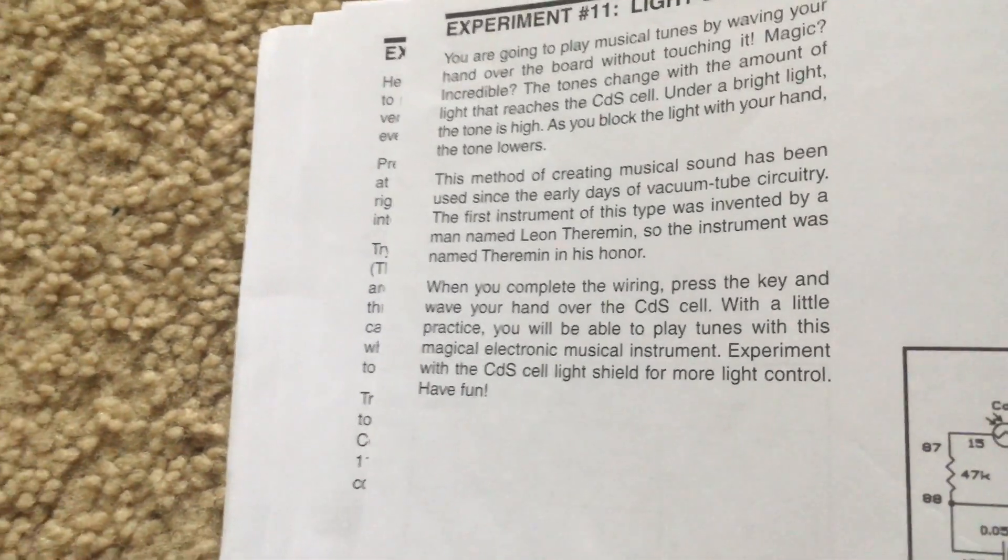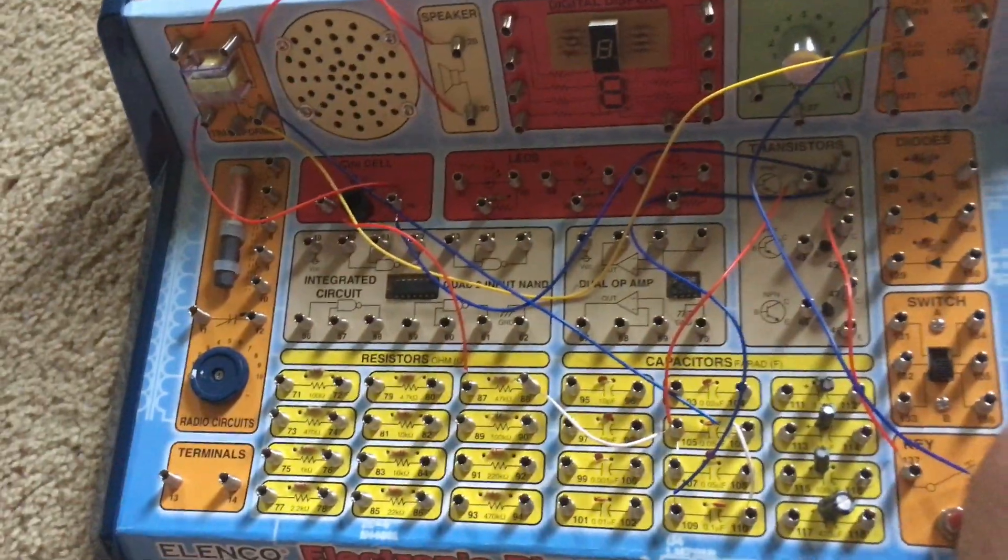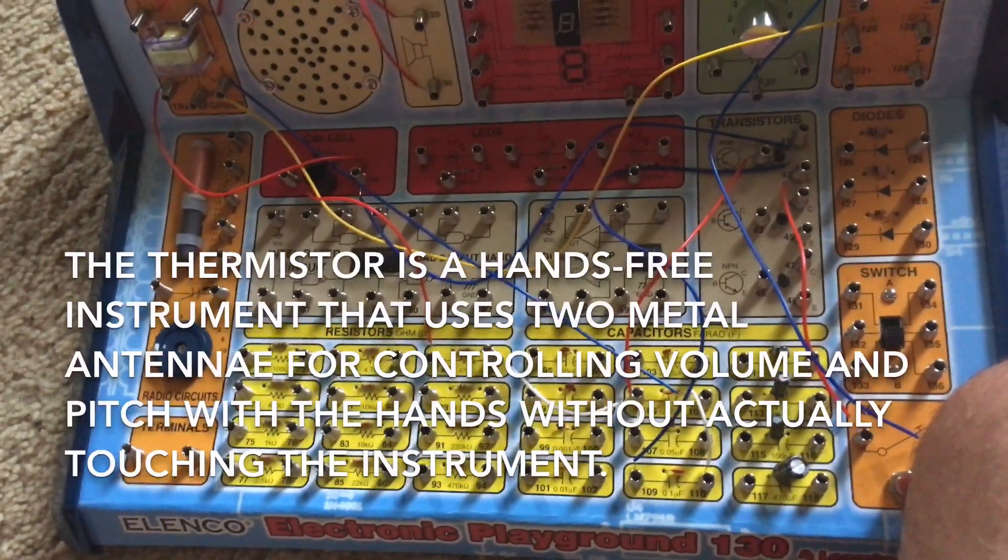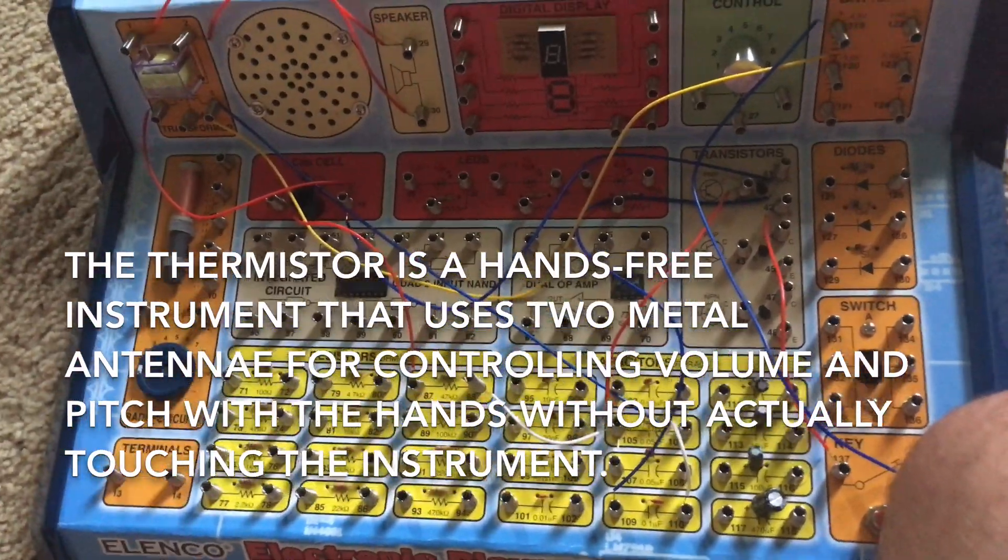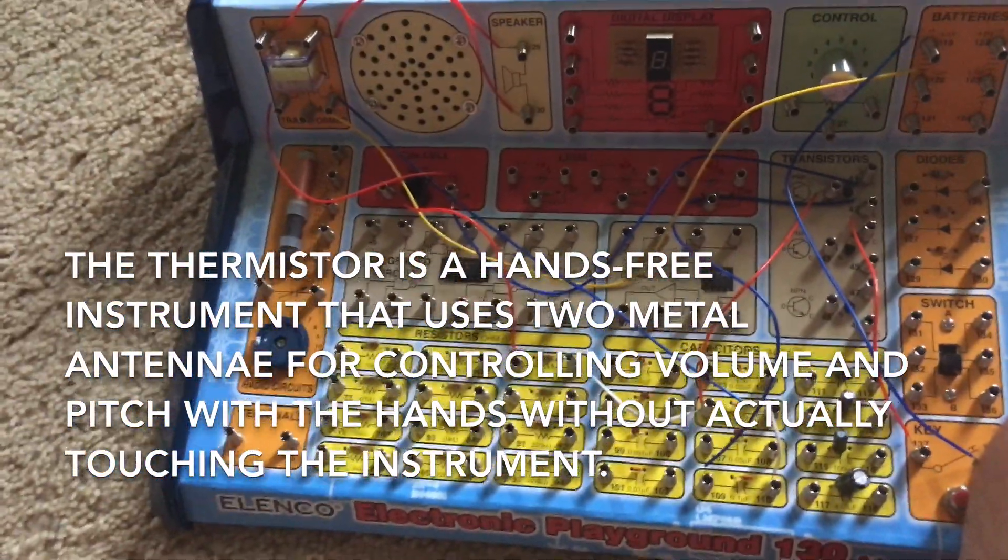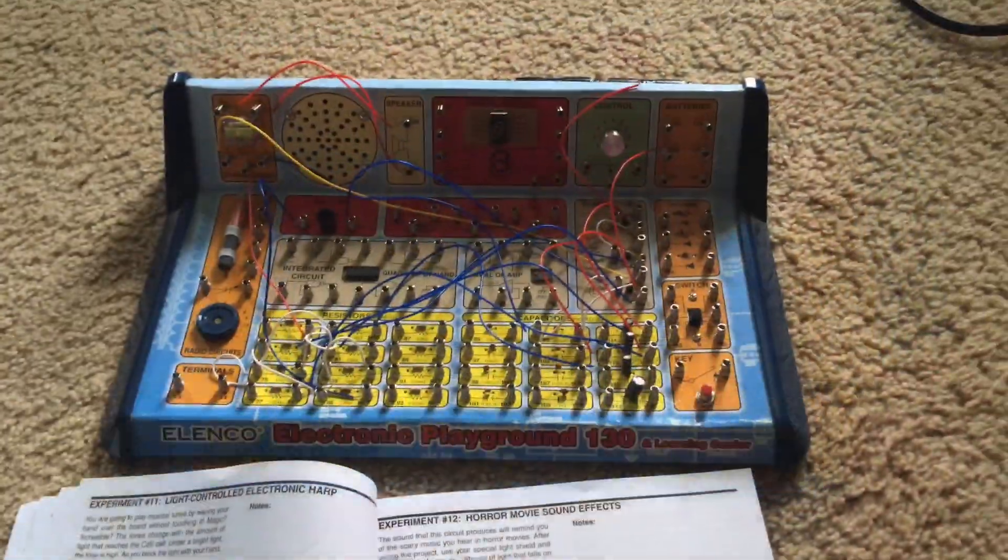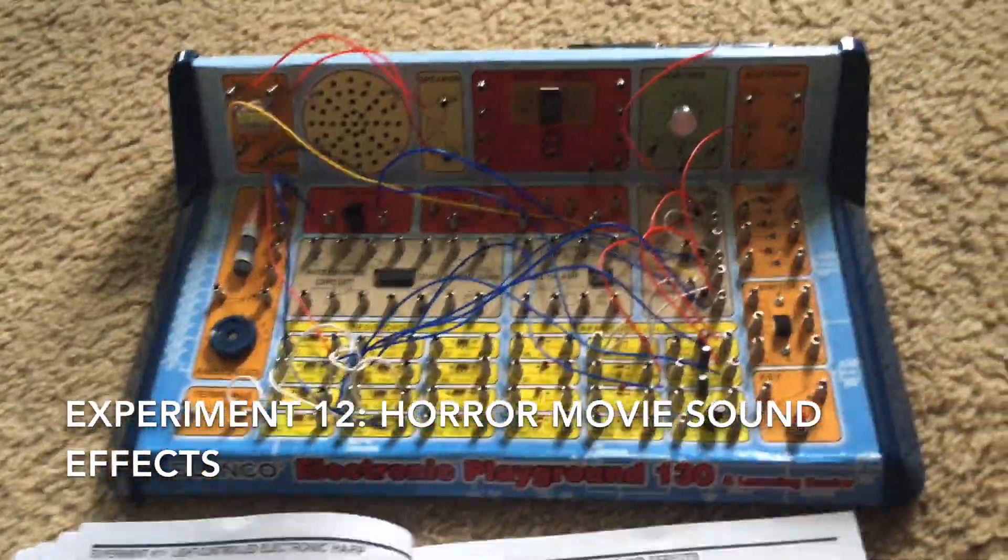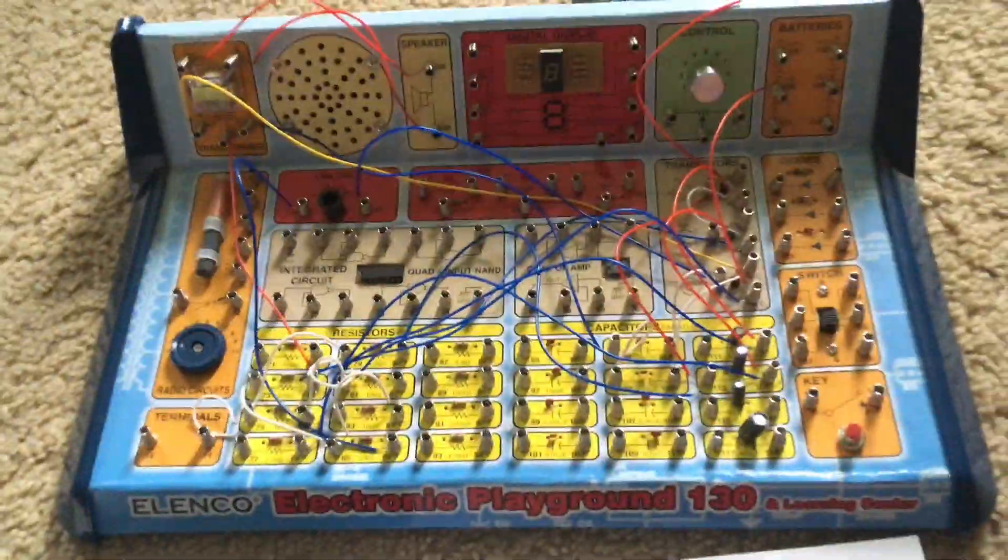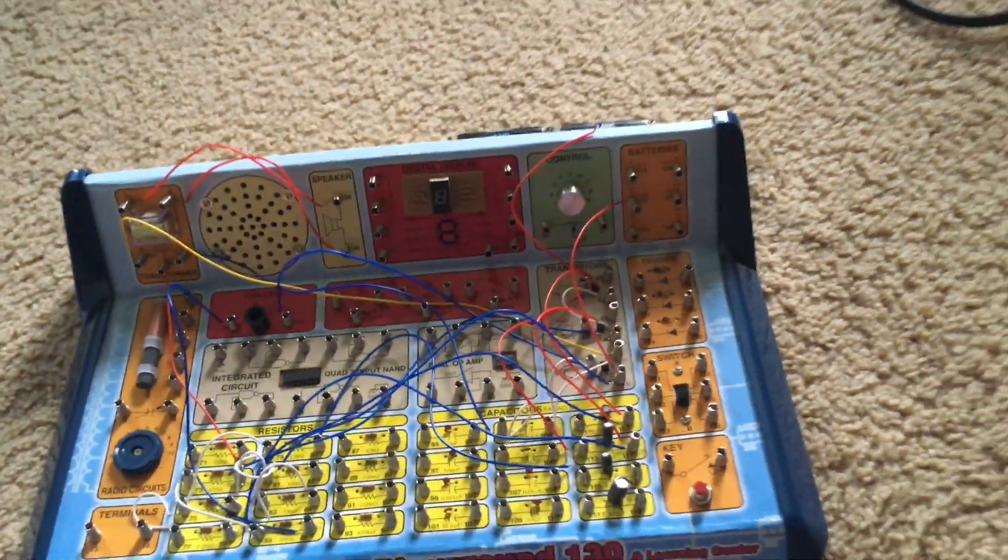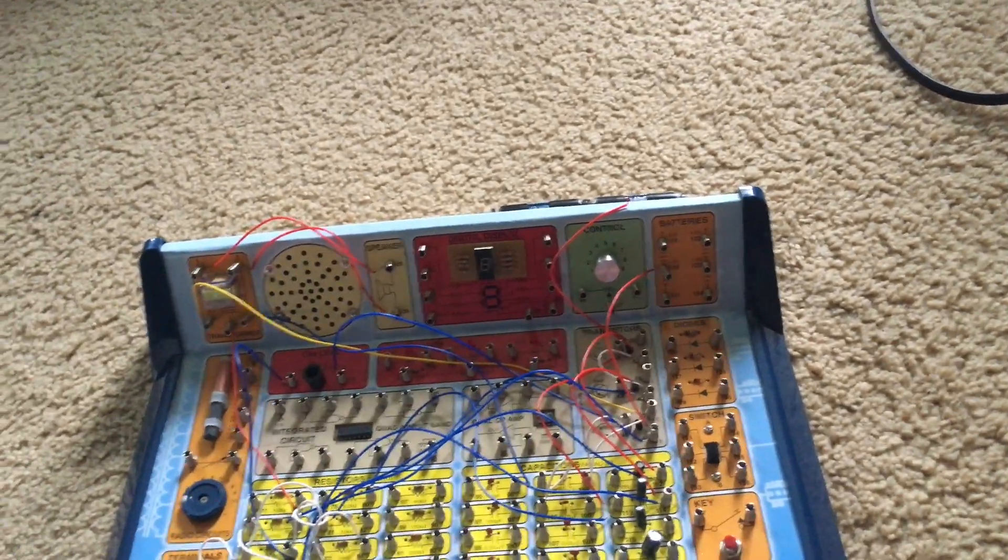This method of creating musical sound has been used since the early days of the vacuum tube. The first instrument of this type was developed by Leon Theremin, and so the instrument was named in his honor. This circuit allows you to produce sound effects identical to those that you might hear in a horror movie.